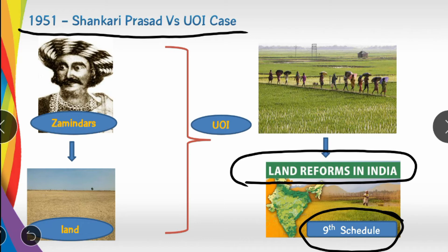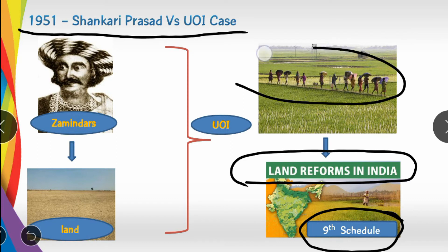In the Shankari Prasad case, the issue involved the zamindari system, where zamindars held thousands of acres of land. The Union of India decided to take action against this land concentration. When agricultural reforms were introduced, the first government decided to implement land reforms in 1951, which was the context for the First Amendment and the basic structure debate.